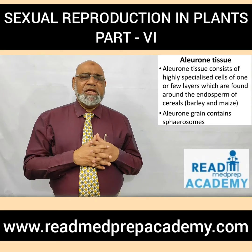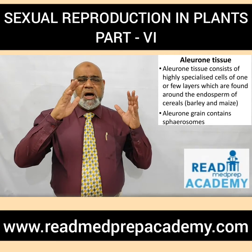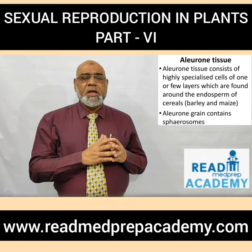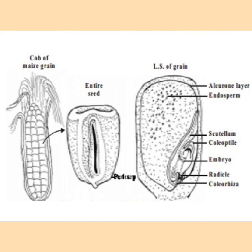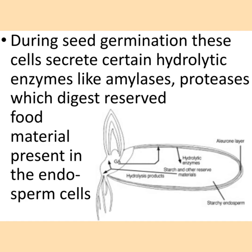The aleurone tissue consists of highly specialized cells of one or a few layers found around the endosperm, seen in cereals like barley and maize. Aleurone grains contain spherosomes. In the maize image you can see the aleurone layer around the endosperm. During seed germination, aleurone layer cells secrete hydrolytic enzymes like amylases and proteases, which digest the reserved food material in the endosperm and supply nutrition to the growing radicle and plumule. The image shows hydrolytic enzymes being released from the aleurone layer to digest starch and other complex food materials.